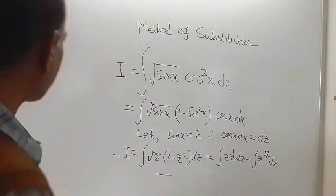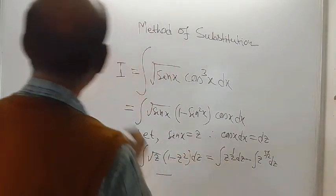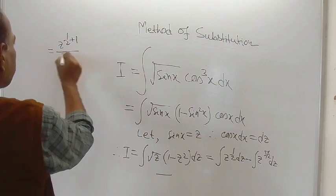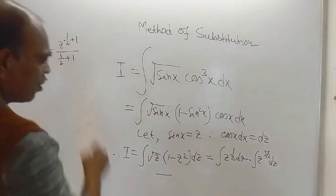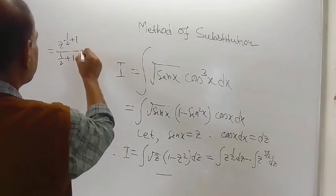The next line I am writing here. This is equal to z to the power half plus 1 divided by half plus 1. And same formula I am going to use here. The form is same.